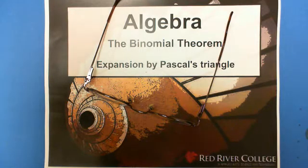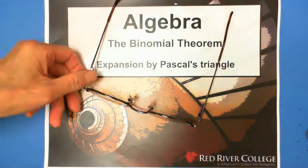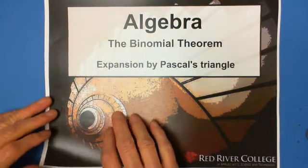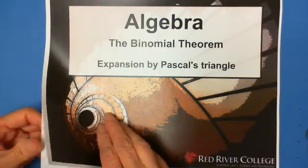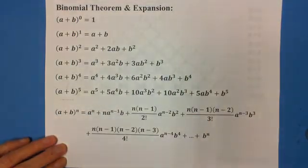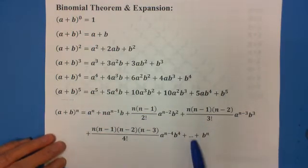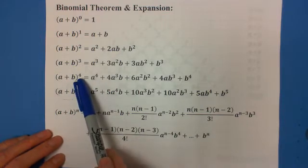Welcome to Wiseguys. Binomial theorem expansion by Pascal triangle. When we expand the binomial, there is a formula to follow. For example, we expand a plus b to the 4th exponent.